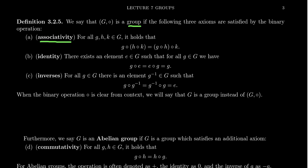The first axiom is called the associativity axiom. As you're probably familiar with associative operations, the associativity axiom tells us that if we take any three elements inside the set — we'll call them G, H, and K — then since these are binary operations, we take two elements at a time. The associativity axiom tells us that operating the second two first and then following with the first element gives the same result as operating the first two elements first and then following with the third. We can reassociate the parentheses and omit them without ambiguity, effectively turning our binary operation into a trinary operation.